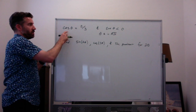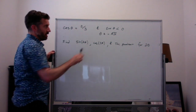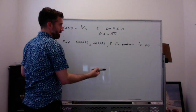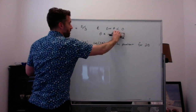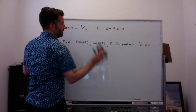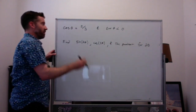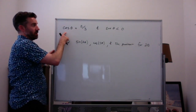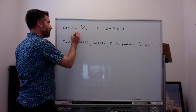We're given that cosine of theta is equal to two-thirds and the tangent of theta is negative. Theta is in quadrant 4 because cosine is positive and tangent is negative, so theta is in quadrant 4.